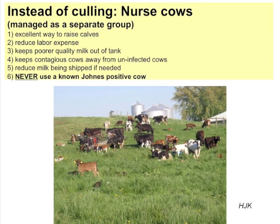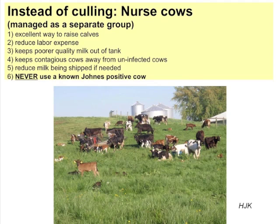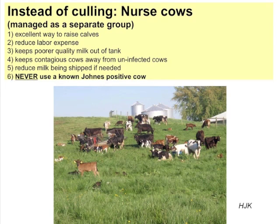Another option is a nurse cow program. High cell count cows, especially first-calf heifers, are put in a group with calves that run like a beef herd. The calves nurse — two or three grafted onto each cow — and we don't milk these cows. Some cows that go through a cycle like that with high somatic cell counts will come back the next lactation with low somatic cell counts. It doesn't always work, but it does work sometimes and raises a healthy calf.